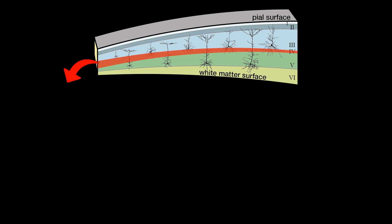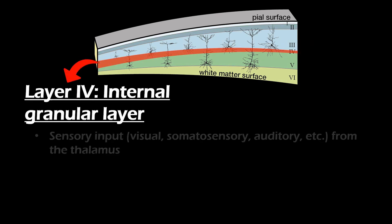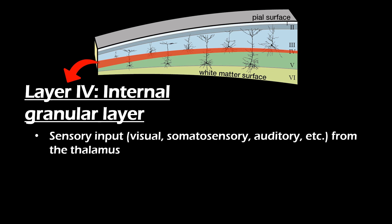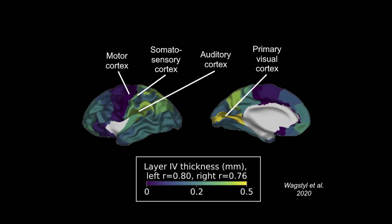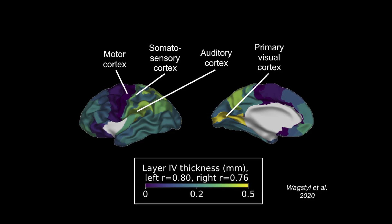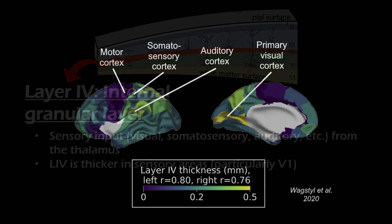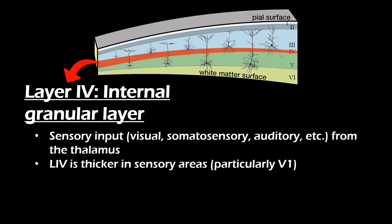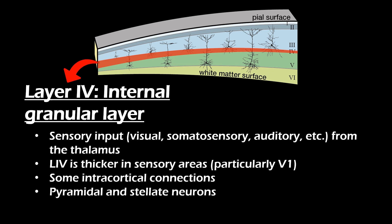The internal granular layer is the fourth layer of the cortex. The main input to layer 4 comes from the thalamus and consists of primarily sensory information. As such, layer 4 makes up a larger proportion in, for example, the visual and somatosensory cortex when compared to the motor cortex. For example, visual information entering the eyes that travels to the thalamus subsequently goes to layer 4 of the primary visual cortex. Some additional input comes from intracortical regions. Excitatory cells in layer 4 mostly consist of pyramidal cells, but can also be stellate cells depending on the region and the species. Layer 4 neurons have strong connections to local layer 2 and layer 3 neurons.